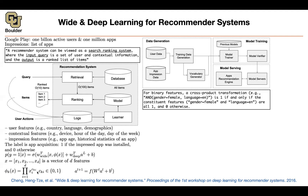Let's go back to this formula. Starting with categorical variables: say you have a variable for gender with two options, and a variable for language with three options. Your observations are one-hot vectors — for gender, female is represented as one, zero; for language, English is one-zero-zero, French is zero-one-zero, and so on.